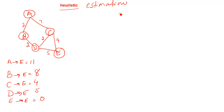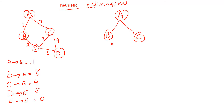We will start from point A, and from point A we have two routes: one going to B and the second going to C. What is the heuristic value of B and C? B is 8 and the heuristic value of C is 4. We have to see which one is lower. In this case, C with a cost of 4 is lower than B, so we will expand C.